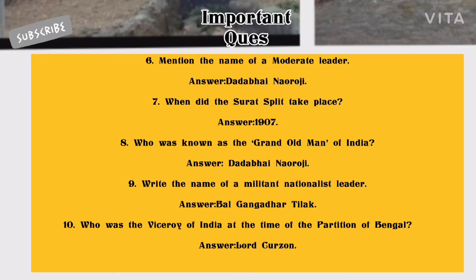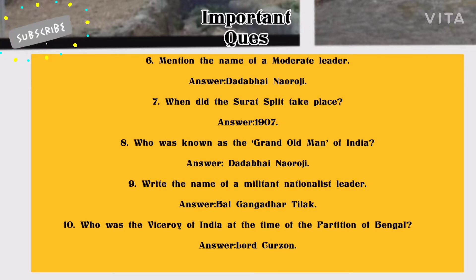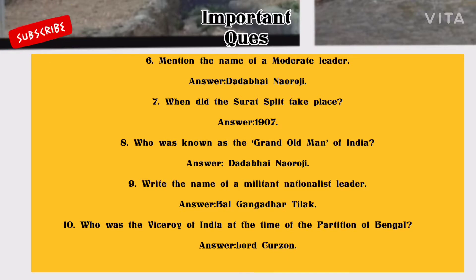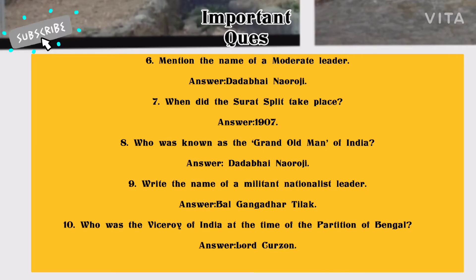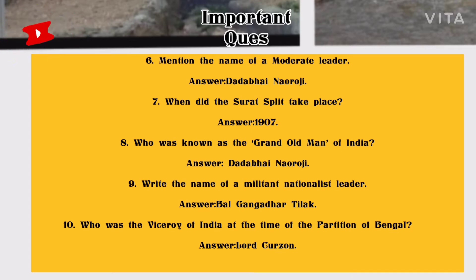Number 7: When did the Surat Split take place? Answer: 1907. Number 8: Who was known as the 'Grand Old Man of India'? Answer: Dadabhai Naoroji. Number 9: Write the name of a militant nationalist leader. Answer: Bal Gangadhar Tilak. Number 10: Who was the Viceroy of India at the time of the Partition of Bengal? Answer: Lord Curzon.